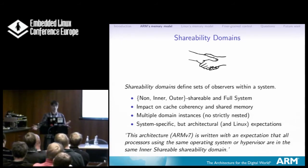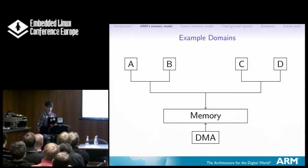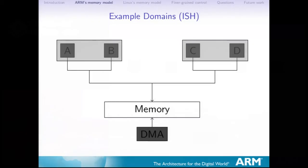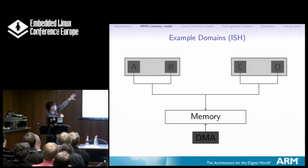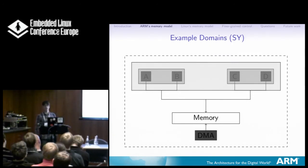You could build something where that's not the case, and you won't be able to run a single Linux instance on it. Here's a picture: four processors A, B, C, D connected to memory, with a DMA controller — five observers total. I gave two inner-shareable domains to show what an outer-shareable domain is. So A and B are in one inner-shareable domain, C and D in another. You couldn't run a quad-core Linux here — you'd run separate instances. The outer-shareable domain wraps both, and then the system domain wraps everything.